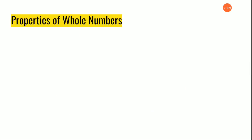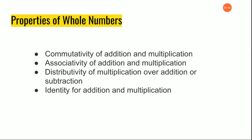Now we are going to see the properties of whole numbers. Properties means the basic operations can be performed on it. There are four properties. First is commutative property of addition and multiplication, and second is associative property of addition and multiplication. Today we will see these two properties. In the next session we will continue with distributivity and identity.